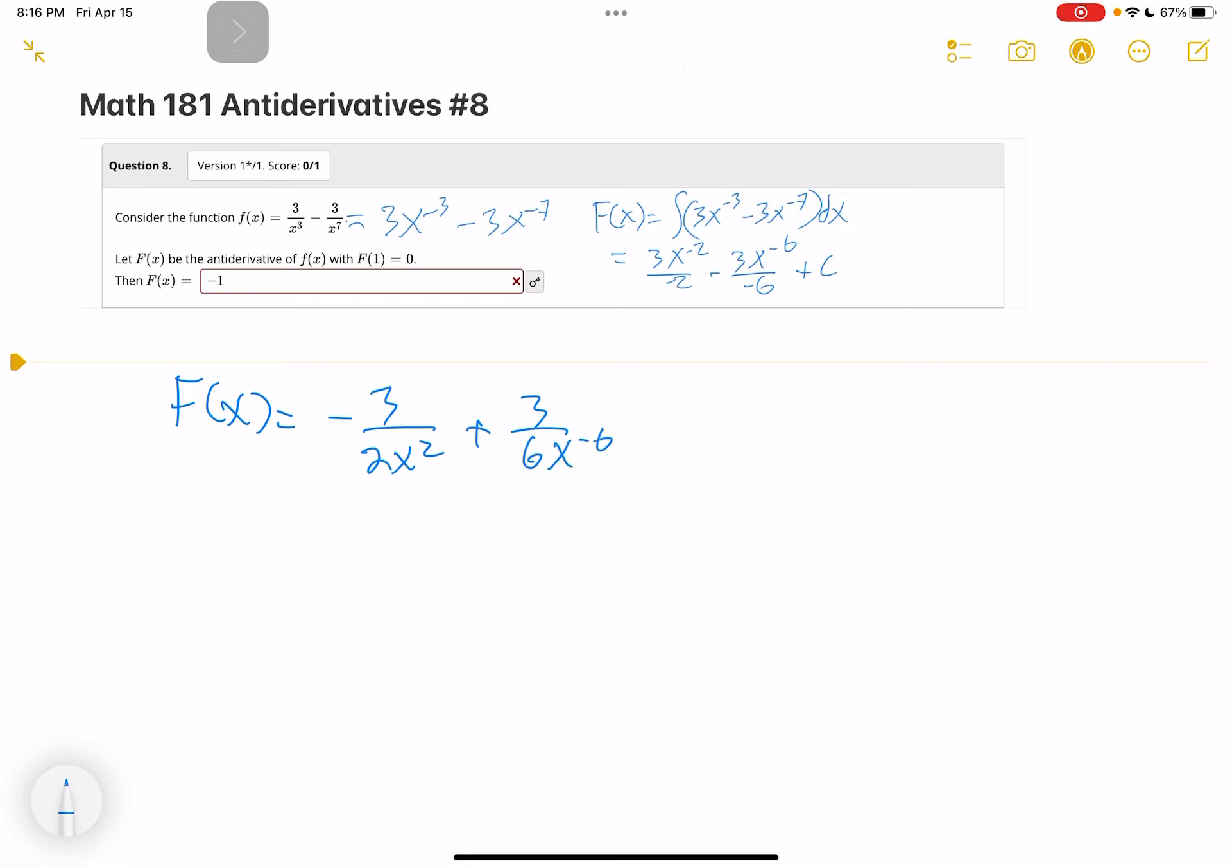Because the negative goes away, so move it down below. By the way, we can reduce this: 3 and 6, 1 into 2, and then we have plus C.